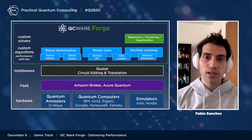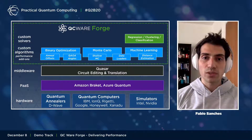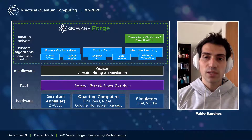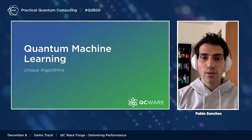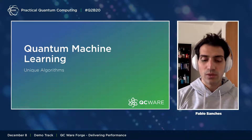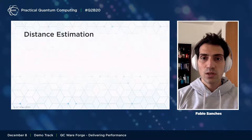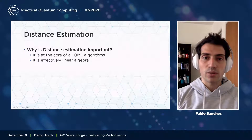A lot of this functionality is built using common middleware developed internally, which makes connecting to the different platforms and hardware backends more straightforward. Now I want to dive into the individual libraries, starting with the quantum machine learning library. Our quantum machine learning algorithms are built using our quantum distance estimation algorithm.